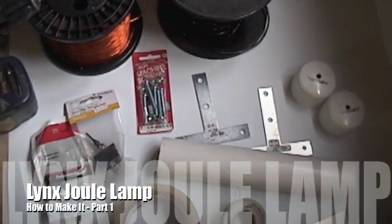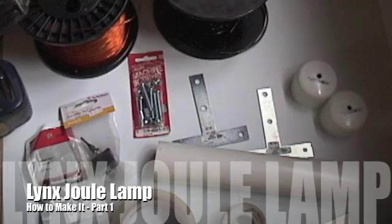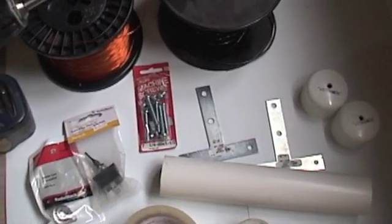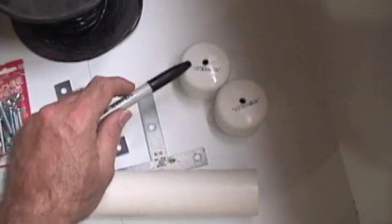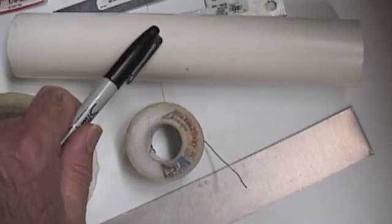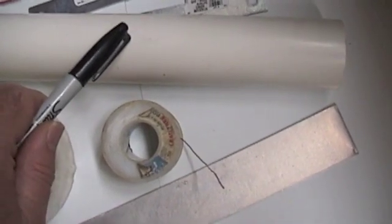To build this LJL you're going to need some pretty standard hardware items. We've got one and a half inch PVC end caps and I've cut a one and a half inch PVC tube ten inches long.